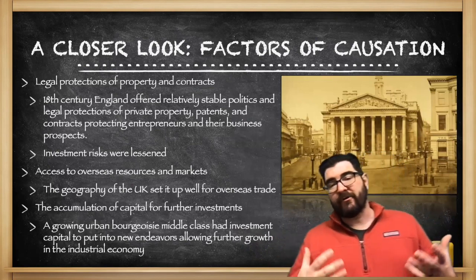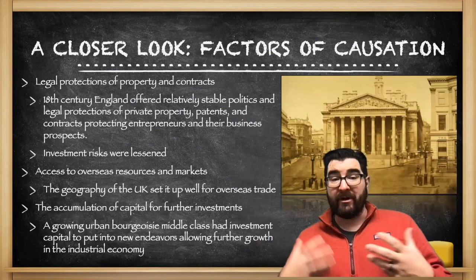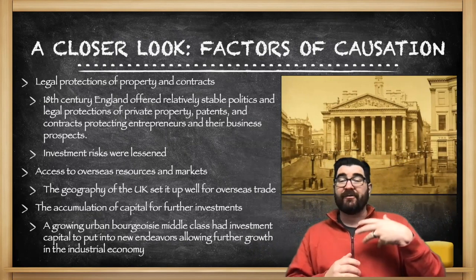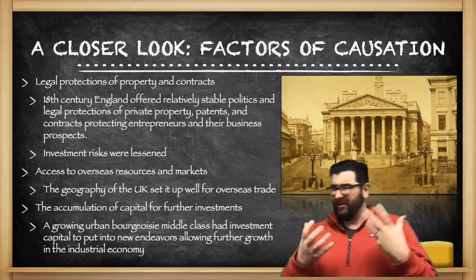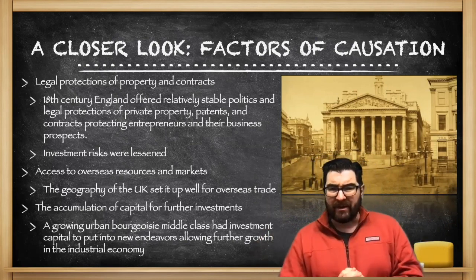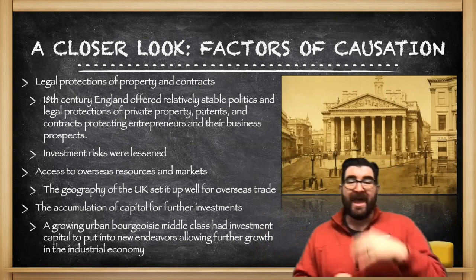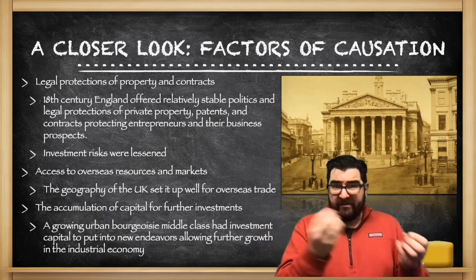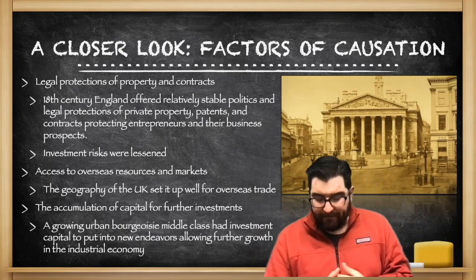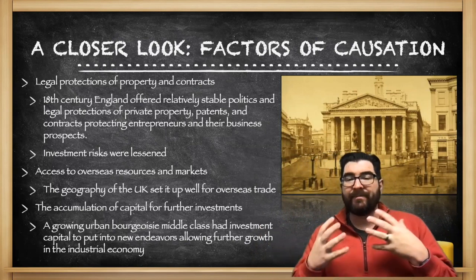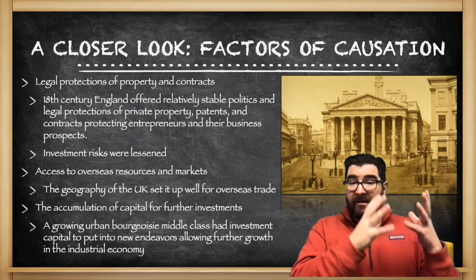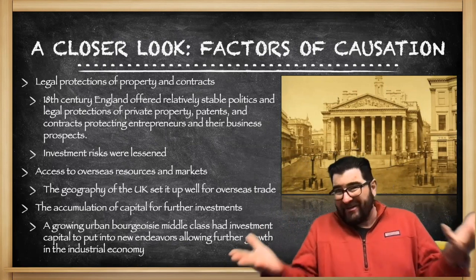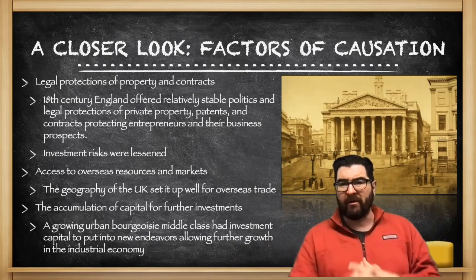England also offers legal protection of property and contracts. In the 18th century, England offered a relatively stable political system — there wasn't a fear of a toppling of the government or the legal system. Legal protections for private property patents meant that if you invent something, you can benefit from it. Contracts would protect entrepreneurs and their business prospects, which served to encourage more of that activity.